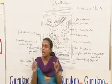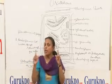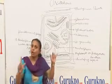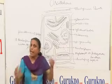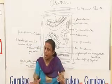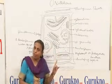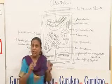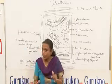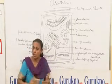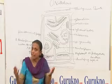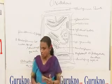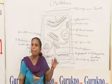Now I move towards nutrition. The main pigment in Oscillatoria is chlorophyll A, and the accessory pigments are C-phycocyanin and C-phycoerythrin. These pigments trap solar energy and convert it, storing carbohydrates as cyanophycean starch.